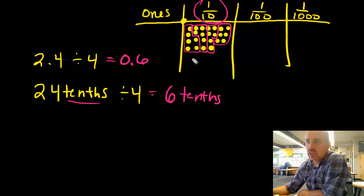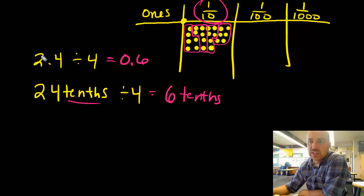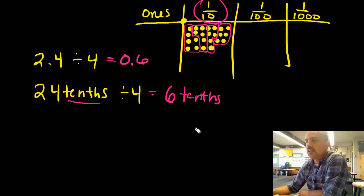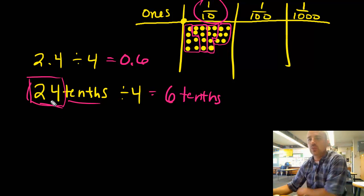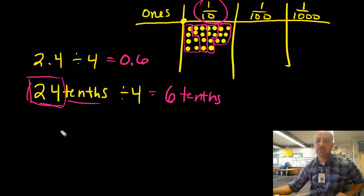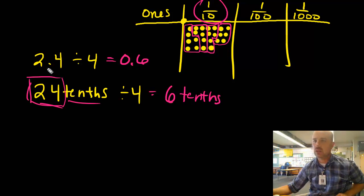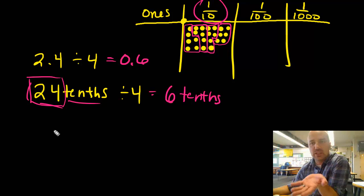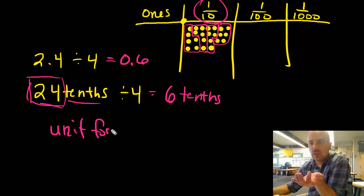Two things I want you to take away from this model: number one, we're putting these units into four equal groups. Down here when I write it in unit form, sometimes it's easier because it makes it more of a regular problem — 24 divided by 4 — rather than worrying about decimals. So when you're doing this, try to use the unit form because it can make things easier.